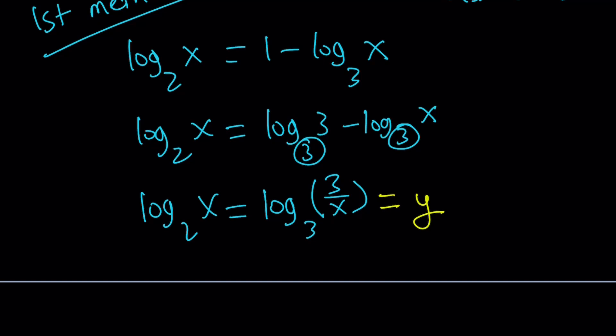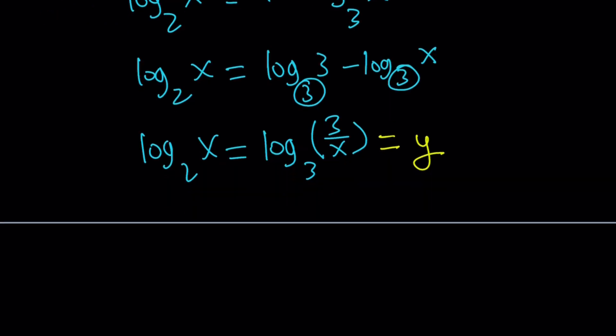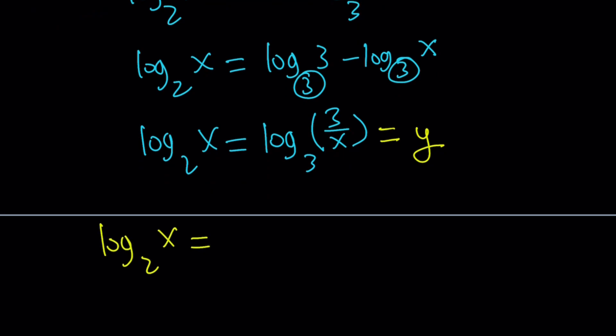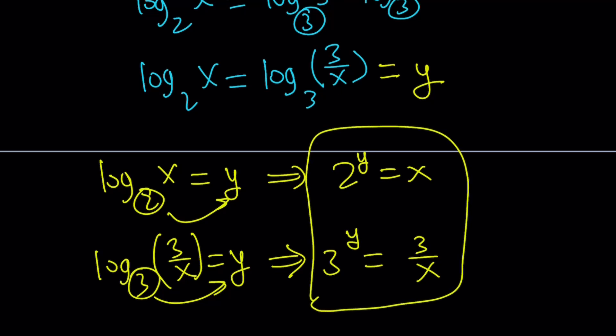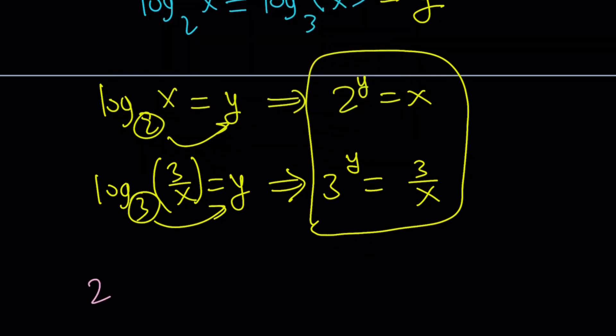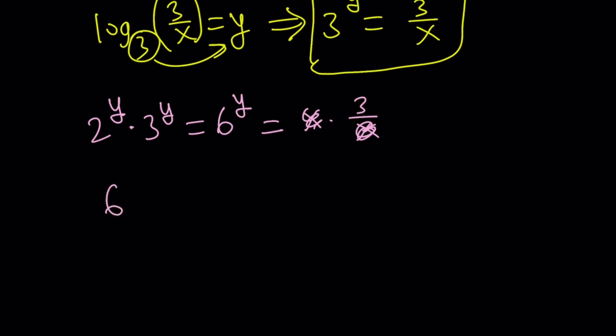Set both expressions equal to y and do not ask why. From here, use the definition of logs. If log x with base 2 is y, then 2 to the power y equals x. Use the second equation - notice I'm dealing with them separately, giving me a system of equations. This gives me 3 to the power y equals 3 over x. If you multiply those two expressions, 2 to the power y times 3 to the power y is 6 to the power y, but it's also x times 3 over x. They cancel out, leaving us with 6 to the power y equals 3.